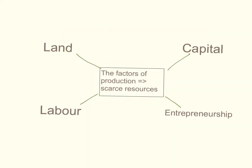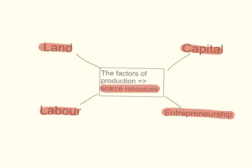There are four main factors of production in economics: land, capital, labour, and entrepreneurship or enterprise. These are the scarce resources that are limited relative to people's needs and wants. They are also the resources used to help produce other goods and services, which is why they are referred to as the factors of production.